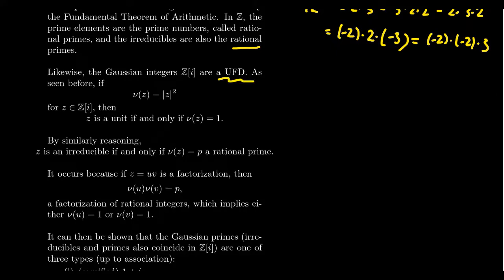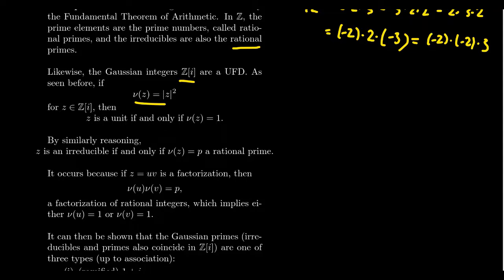Algebraic number theory loves these structures: unique factorization domains, principal ideal domains, Euclidean domains, Dedekind domains. How one often studies integral domains besides the integers is by using a norm — something that acts like the absolute value function. For a Gaussian integer Z, its norm is its complex modulus squared. The key property is that the norm is multiplicative: the norm of Z = U·V equals the norm of U times the norm of V. That's why norms are very useful in factorization — they give a multiplicative homomorphism from the ring into the natural numbers.